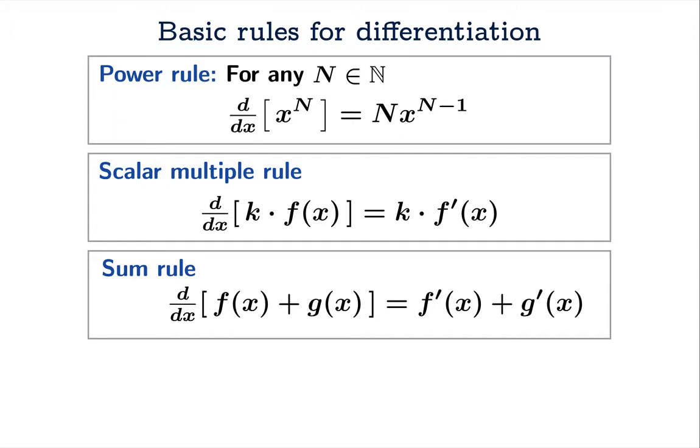The scalar multiple rule which says that the derivative of a scalar multiple of a function is simply what you get by taking the multiple of the derivative of that function.